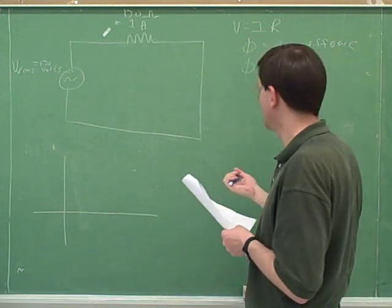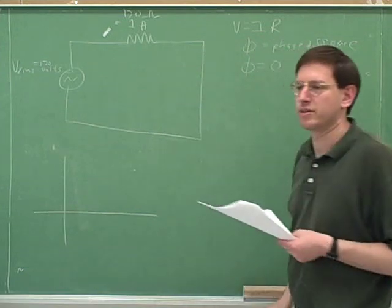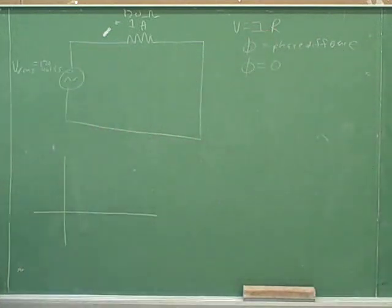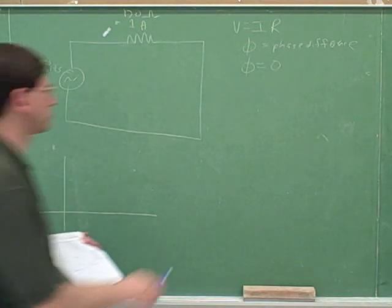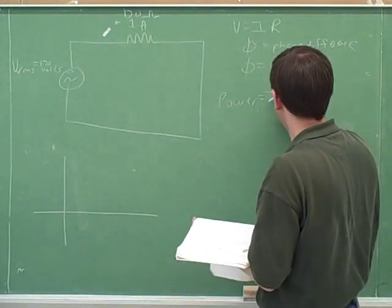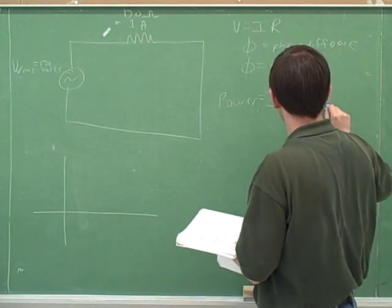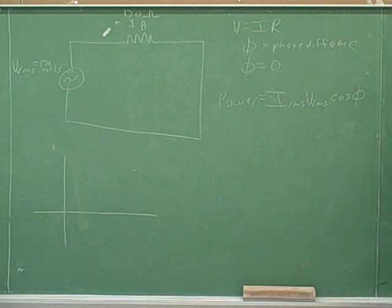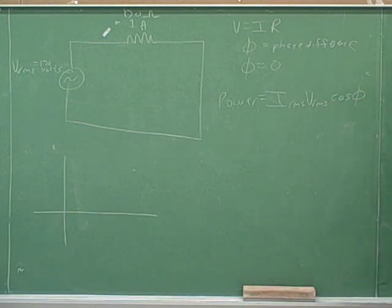The voltage and the current are always in phase with each other, so the phase angle is zero. Here's our equation for power with alternating current. For direct current, the power was just IV, but for alternating current we have a more complicated equation.